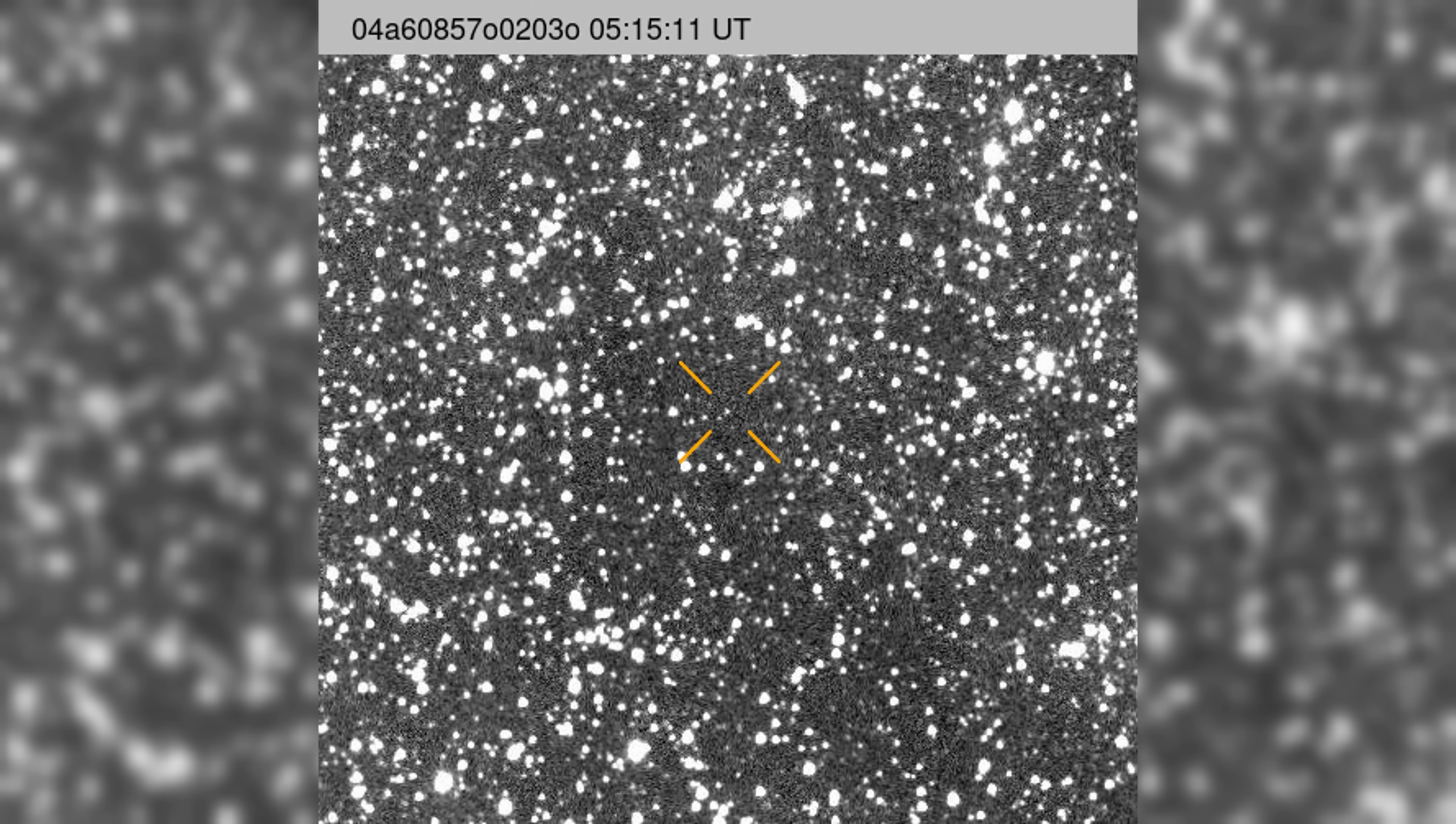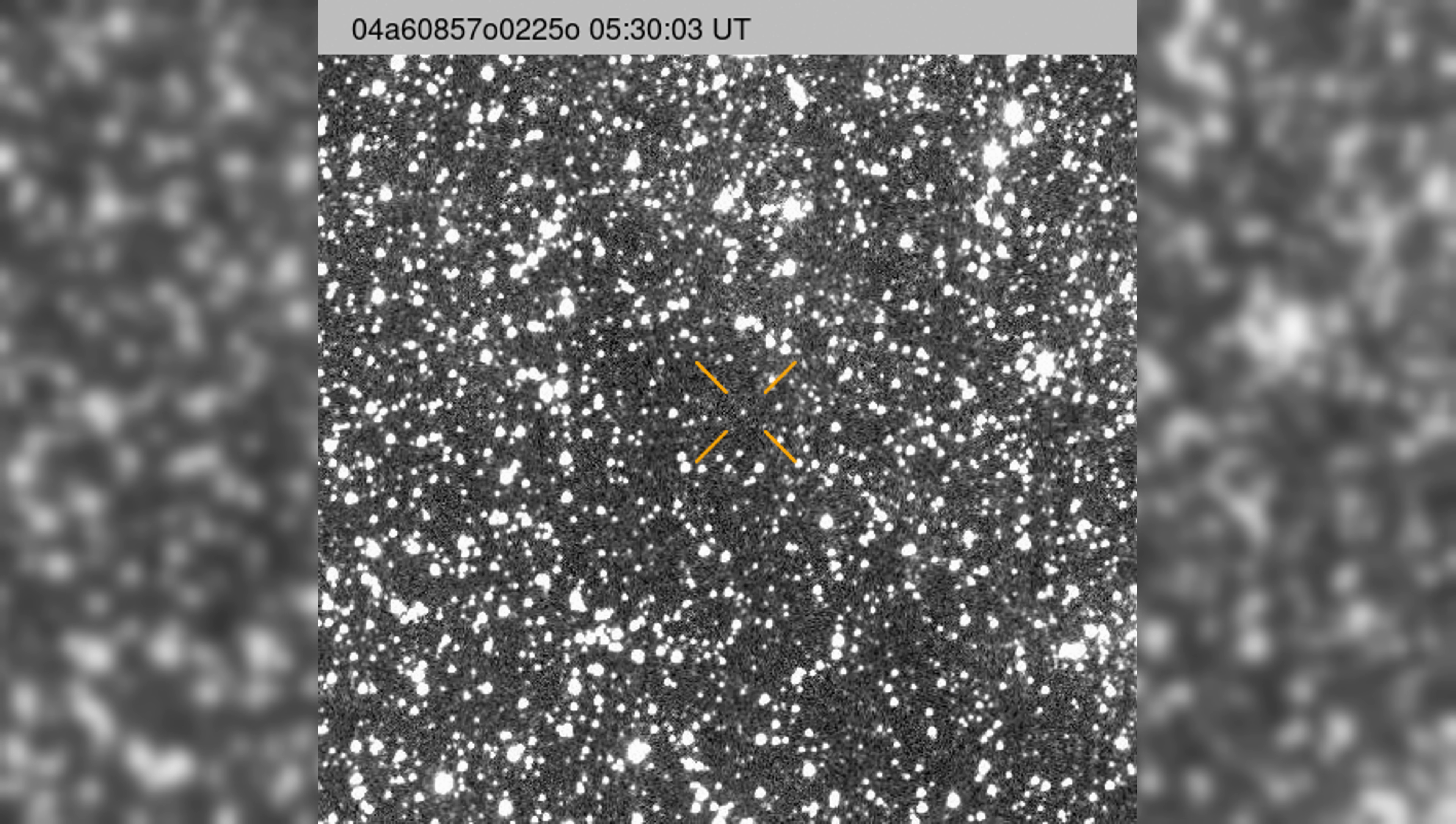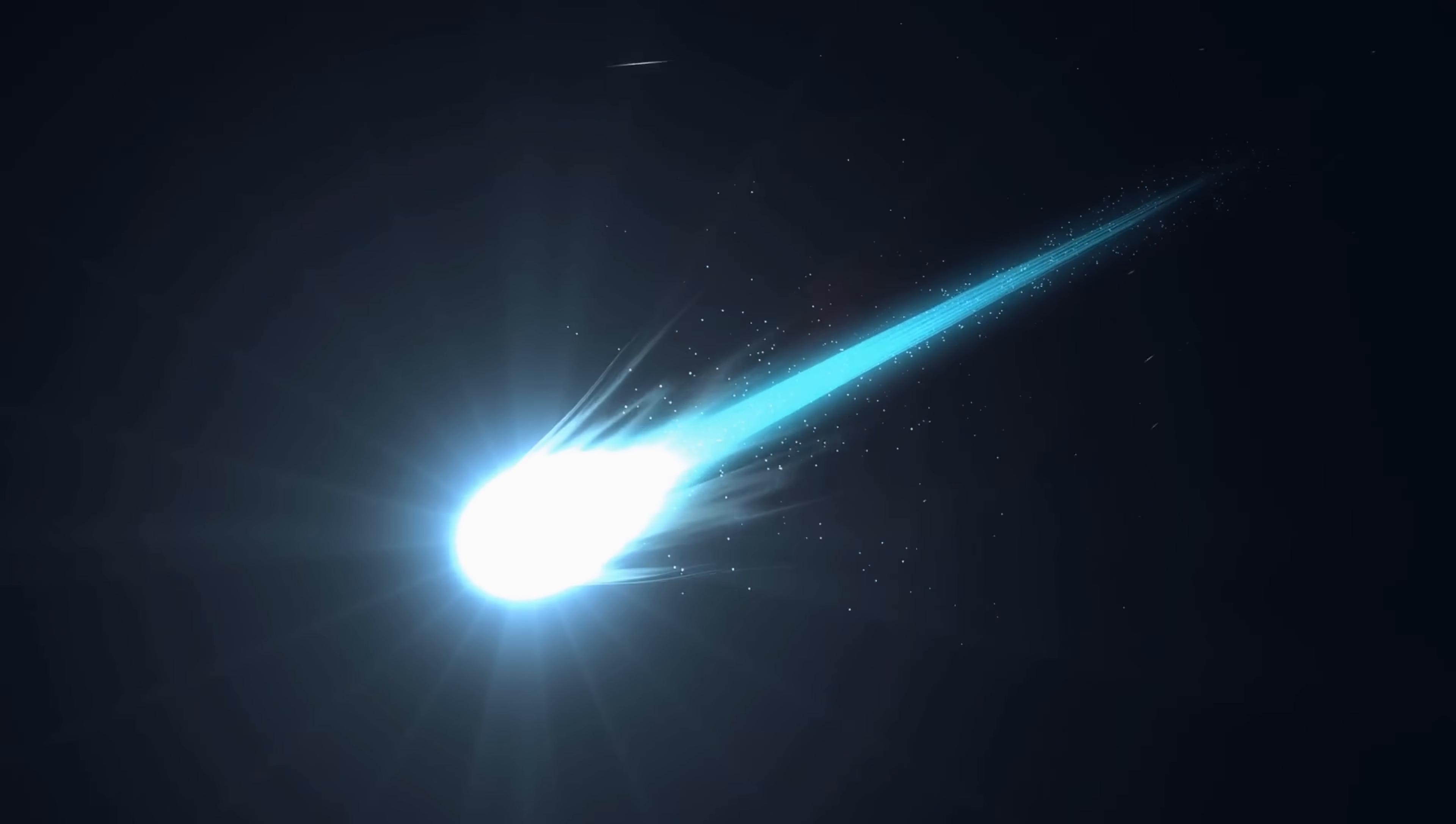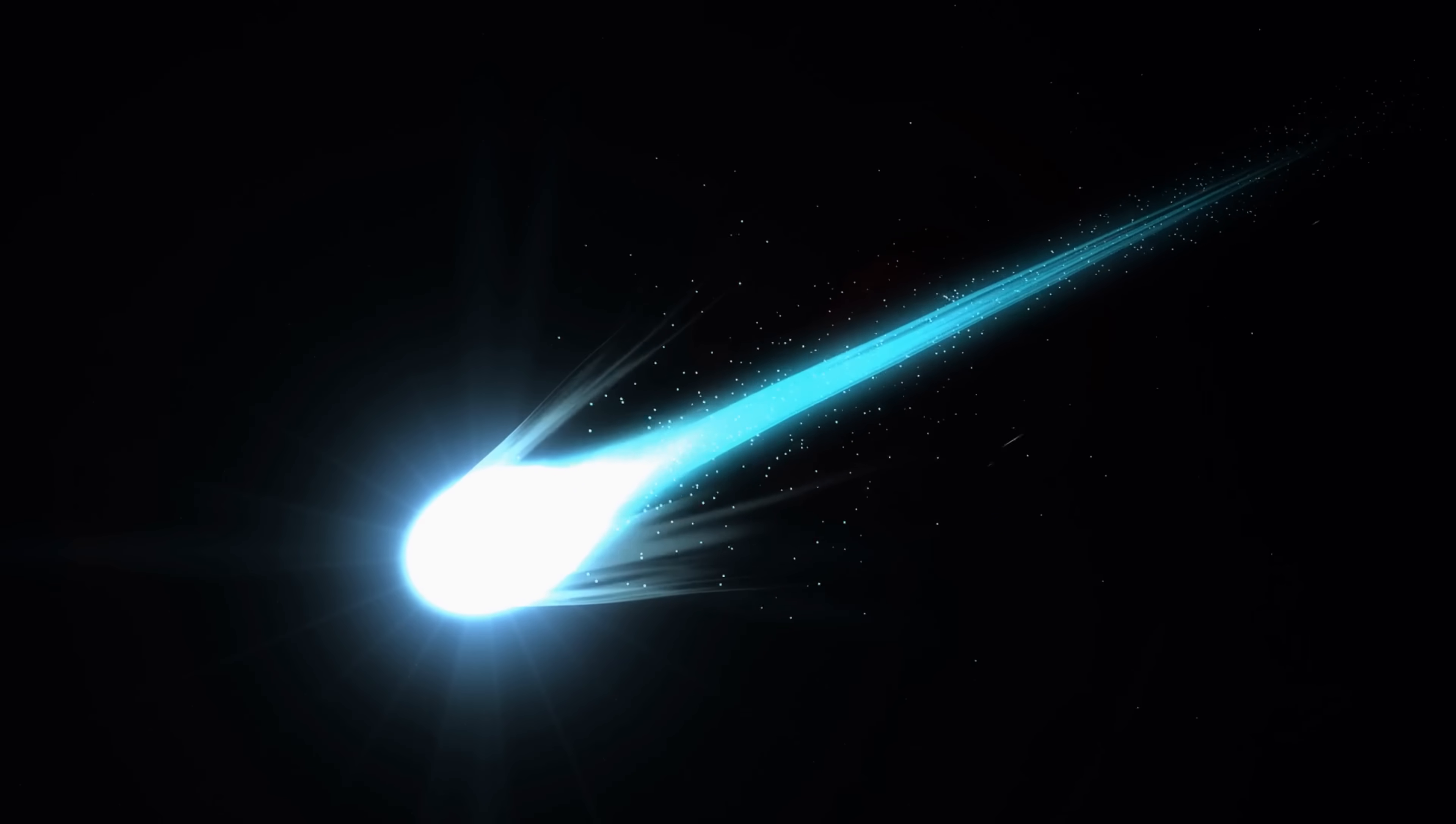For now, 3i Atlas continues on its silent path, its coma swelling into space, its twin tails shifting shape against the solar wind. It drifts with improbable steadiness, as though indifferent to the natural forces that should buffet and bend it. Whether it is a comet of impossible proportions, or something crafted with intent, its presence is a stark reminder that the universe still holds riddles far beyond our grasp.